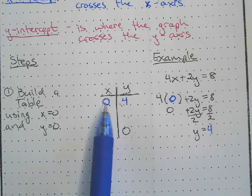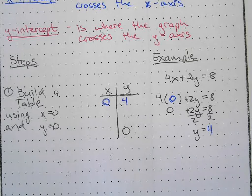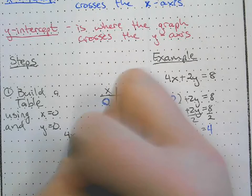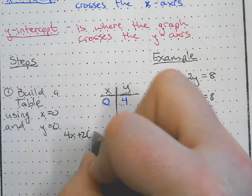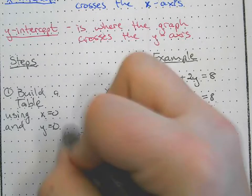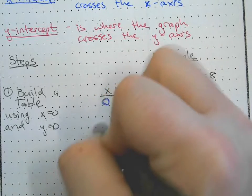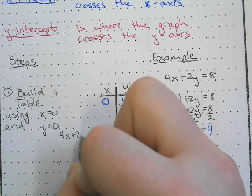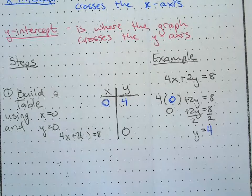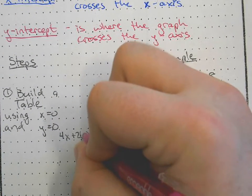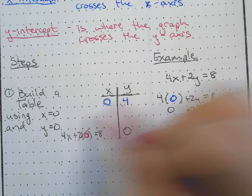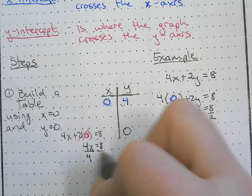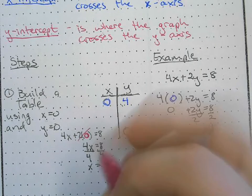Now we'll do the same idea, but instead of x equaling 0, we have y equals 0. So 4x plus 2 times 0 equals 8. The 2 times 0 cancels out, so 4x equals 8. We divide both sides by 4 and get x equals 2.